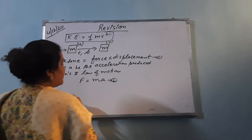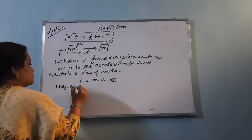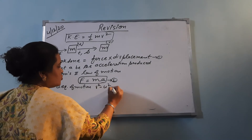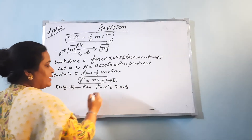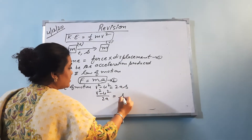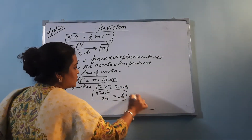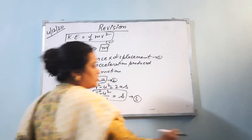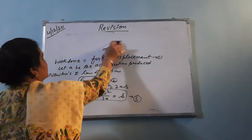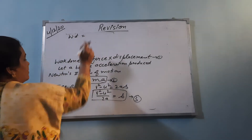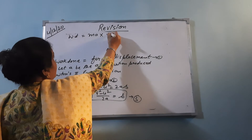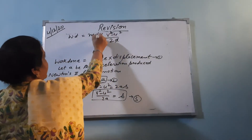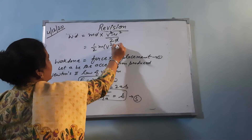This is equation two. Also, by the third equation of motion, v squared minus u squared equals 2as. From here we can calculate s: s equals v squared minus u squared upon 2a. Let this be equation three. Now we substitute force and s into the first equation. Work done becomes m into a multiplied by (v squared minus u squared) upon 2a. The a cancels out, giving W equals half m into (v squared minus u squared).